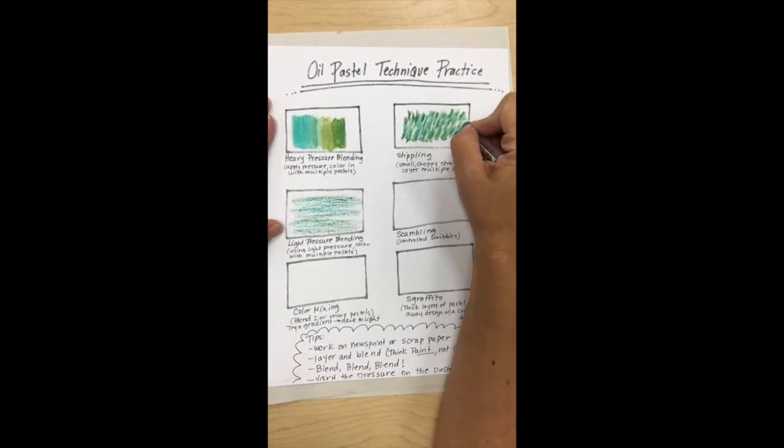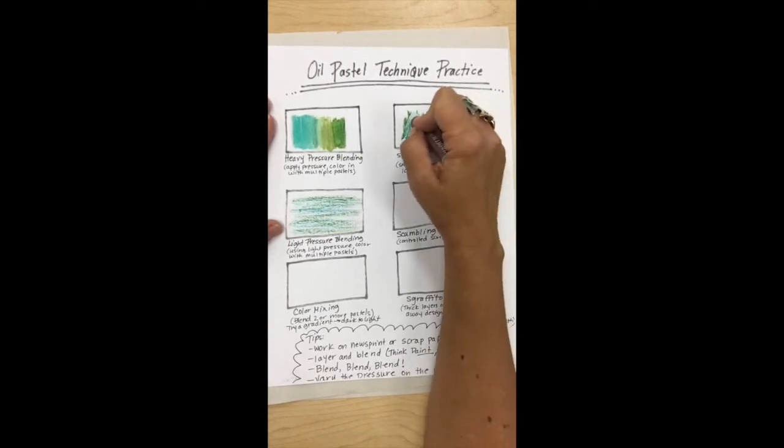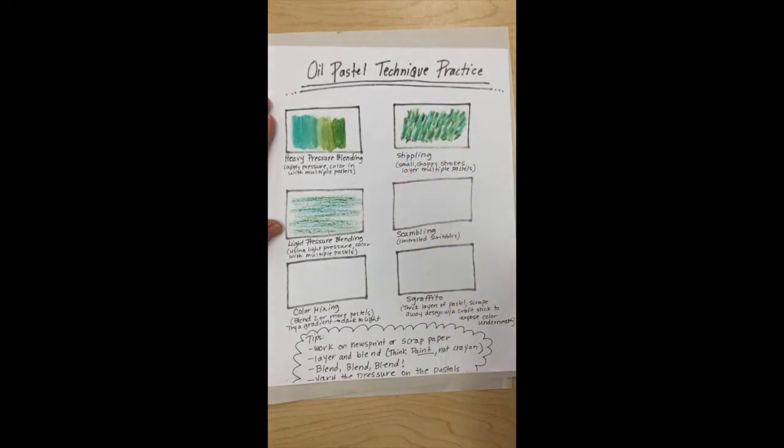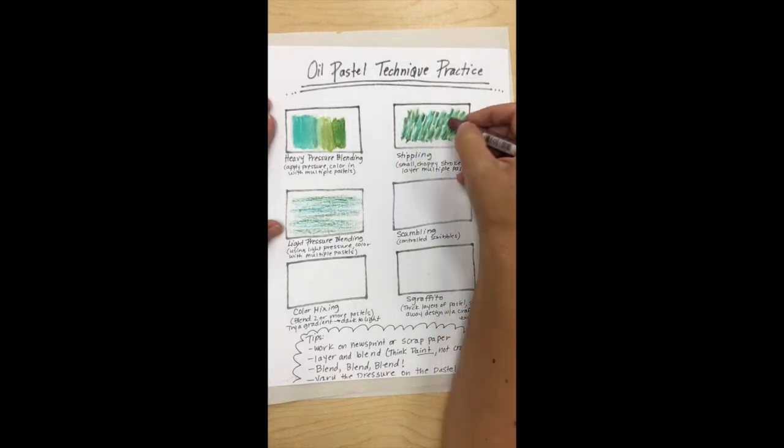So what I'm doing is I'm building up the pastel, so lots of layers. You're gonna hear me say that a lot and you're gonna get sick of me saying it, but that's true: layer, layer, layer your pastels. So that's stippling, kind of cool texture it creates.